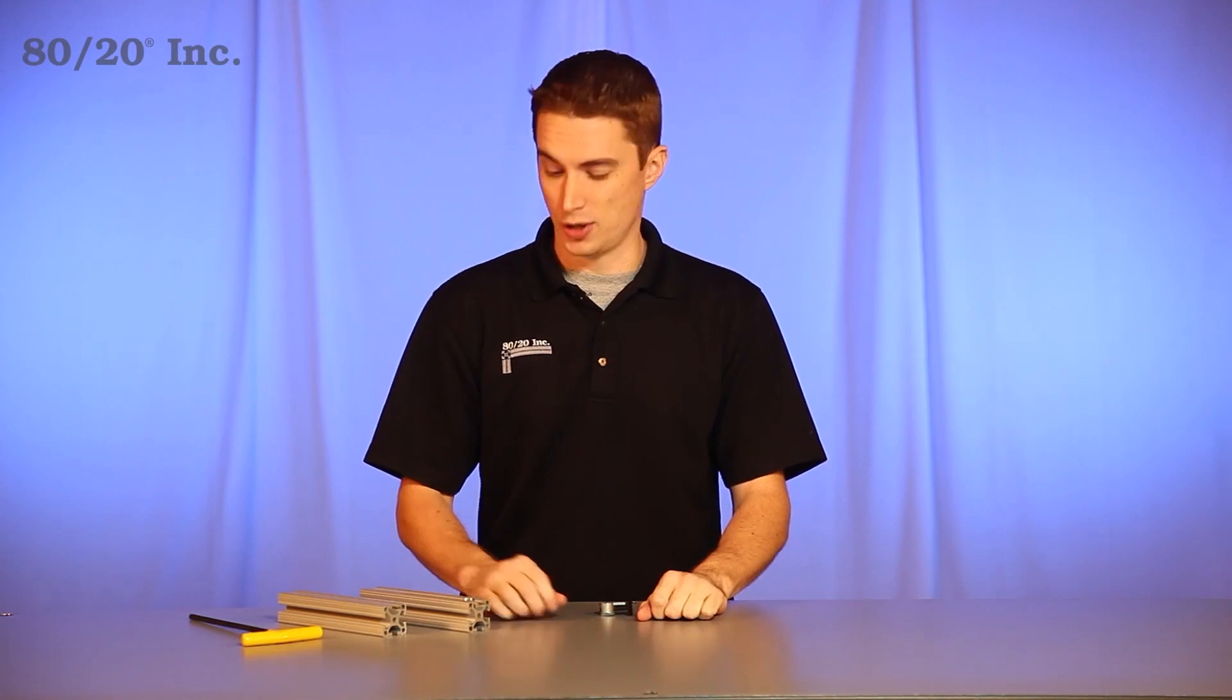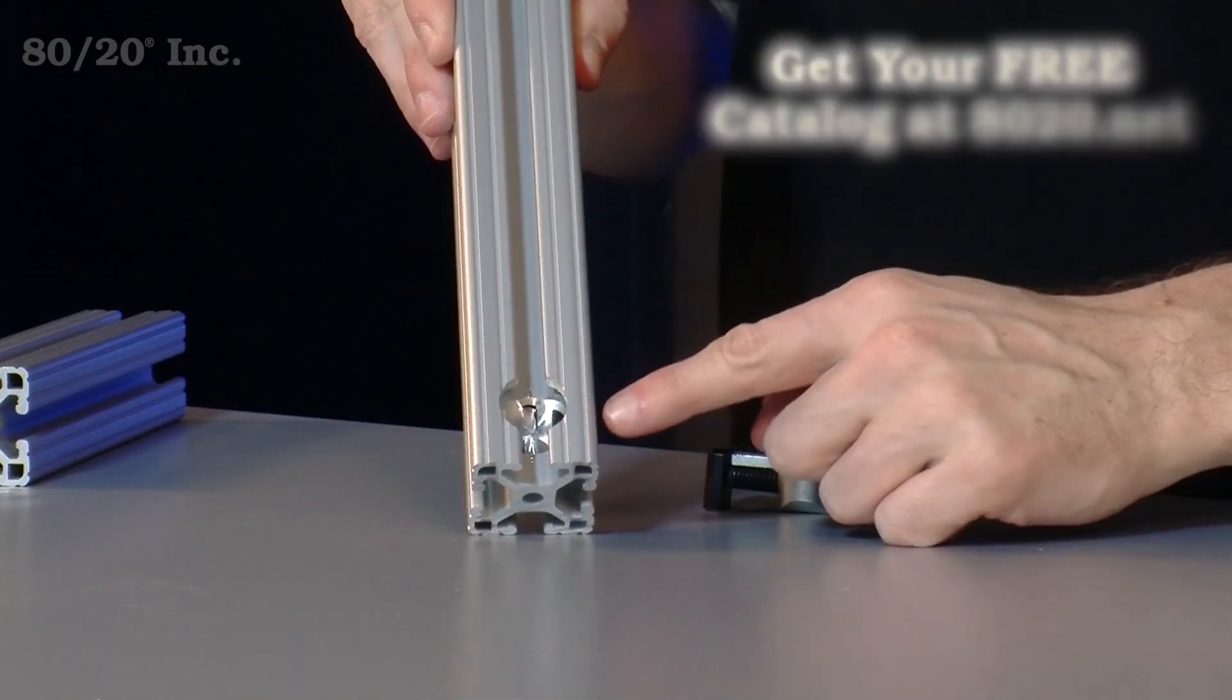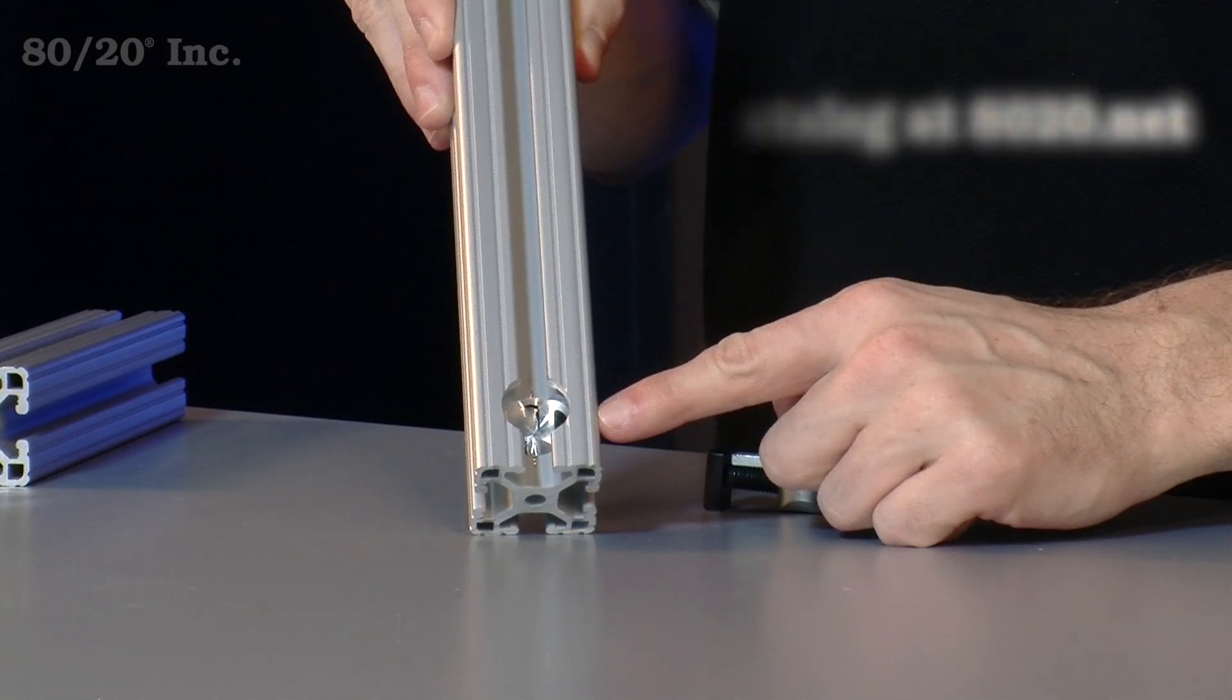Keep in mind when you're using the anchor fastener, your bars will need a counterbore machined into them. For more information on the counterbore service, check out the 8020 product catalog.